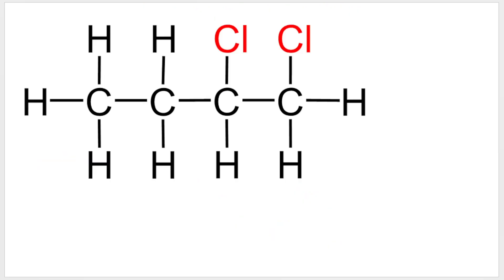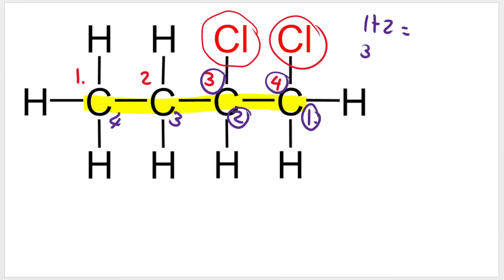What about this example? Let's look for the longest chain. It goes straight across. It does not make sense to number the carbons like this 1, 2, 3, 4, because then our branches are going to be on 3 and 4. Let's try and number it in reverse: 1, 2, 3, 4. One and 2 is much lower than 3 and 4, so we're going to number it backwards.